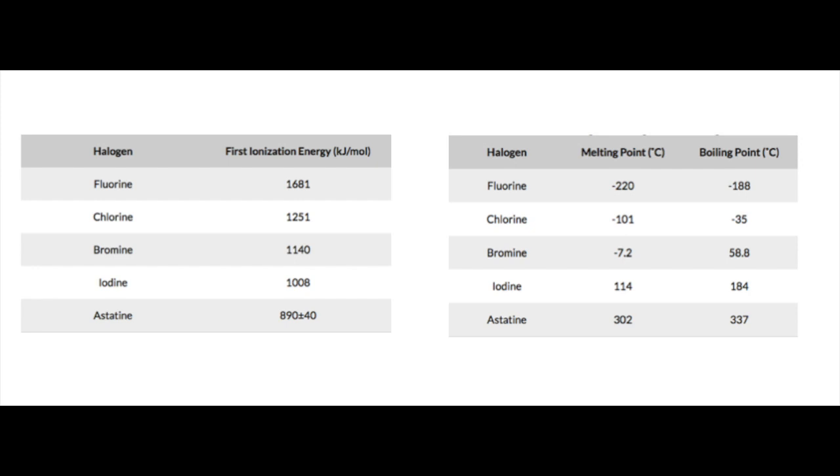The halogens provide multiple periodic trends within their group. The first one is the increase in temperature for both the boiling and melting points, as represented in the table on the right. As the elements go down the group, the boiling and melting points increase.